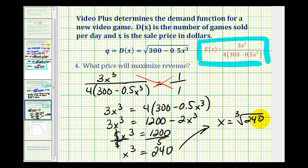which means x is equal to the cube root of 240. And again, to save some time, I've already determined what this would be. x is approximately equal to 6.21, which means the ideal price to maximize revenue, if this is the demand function, would be $6.21.